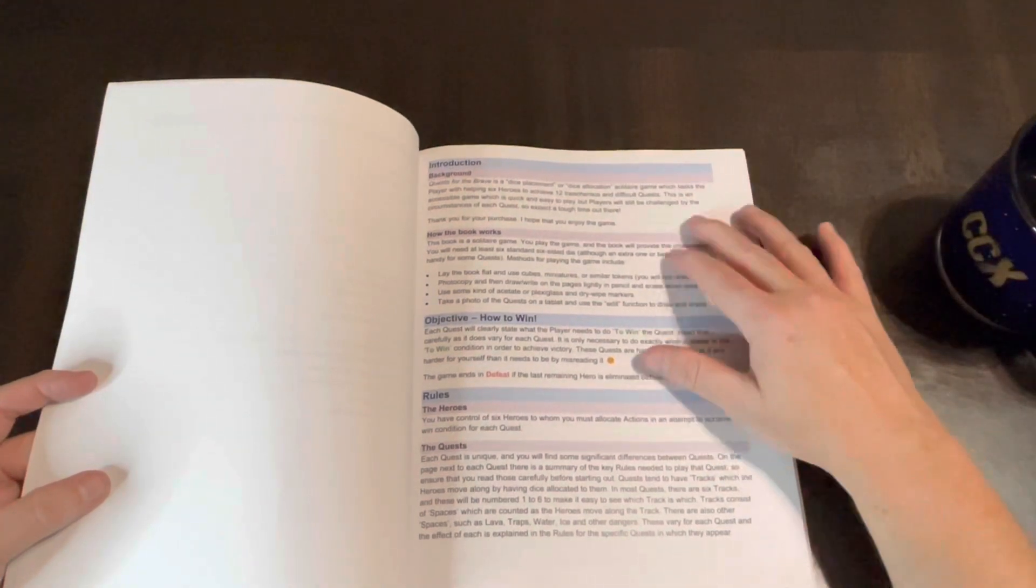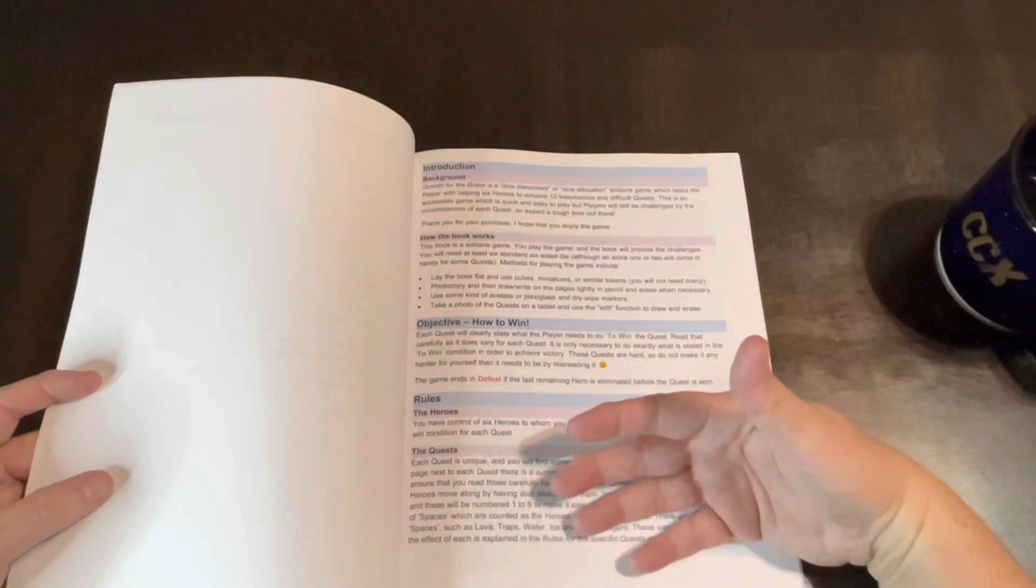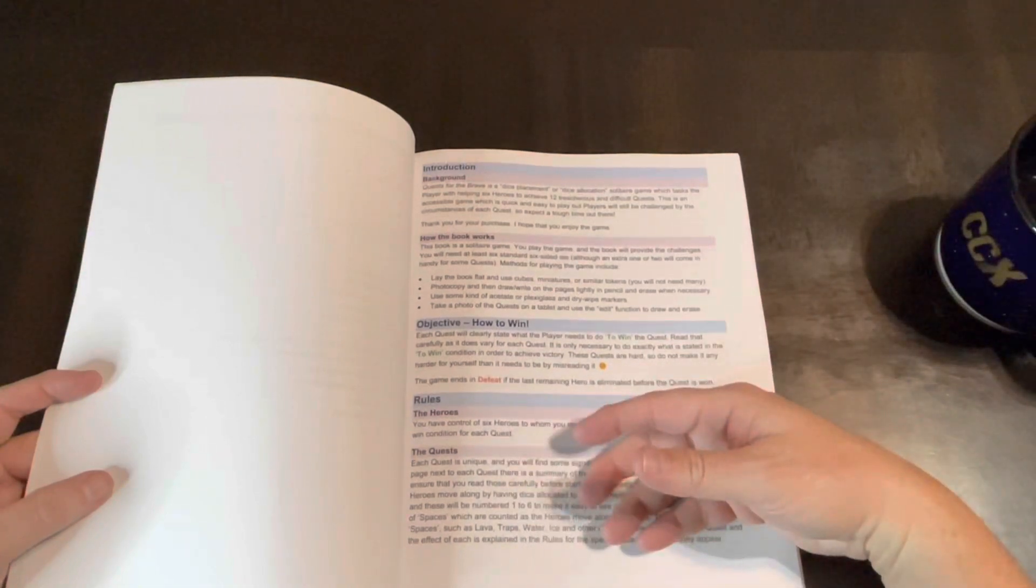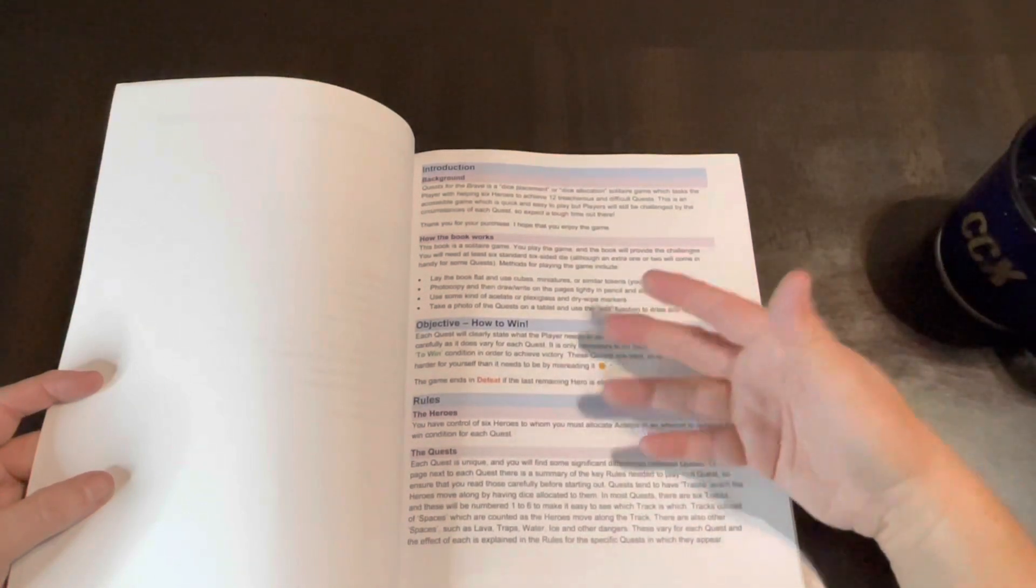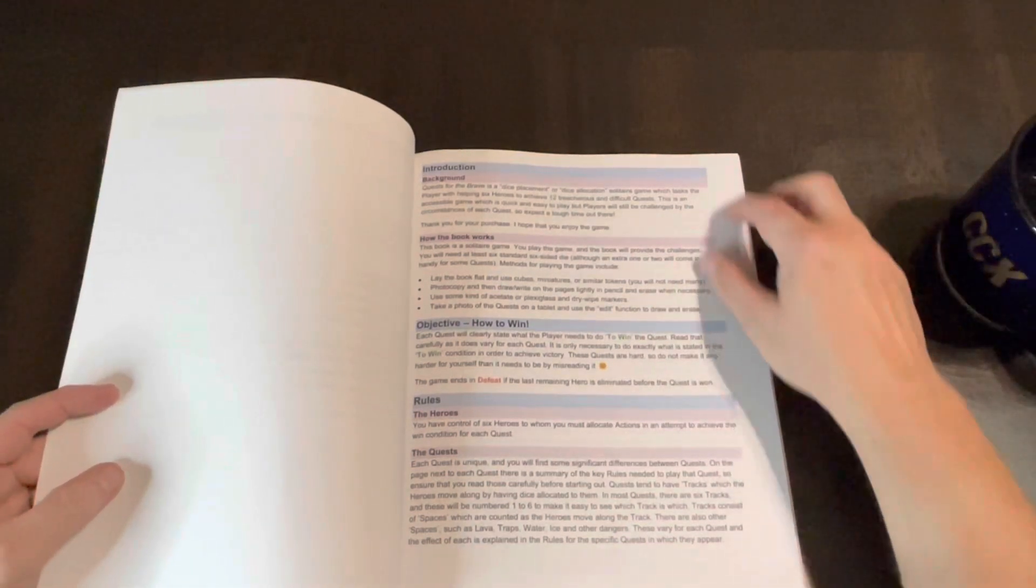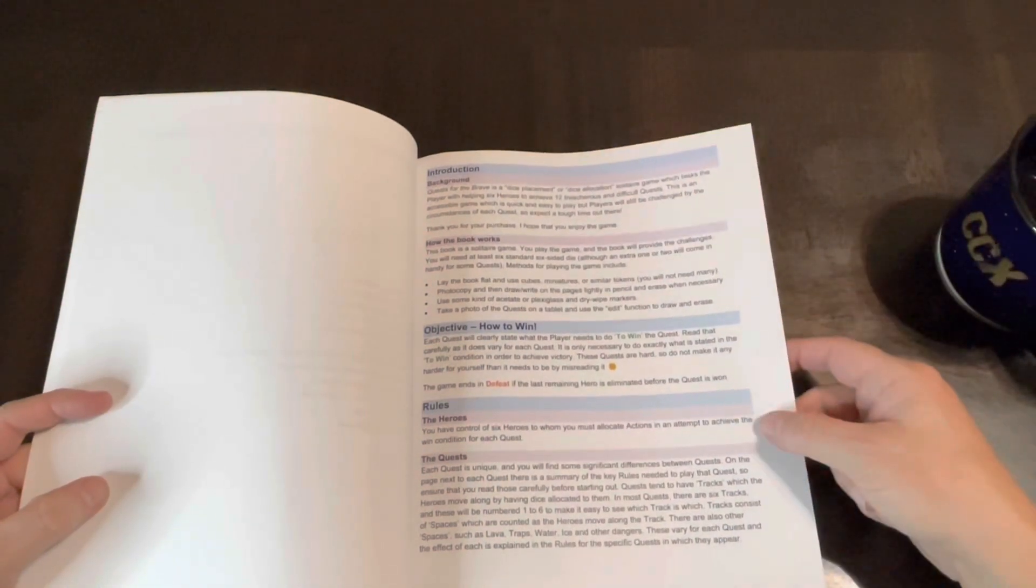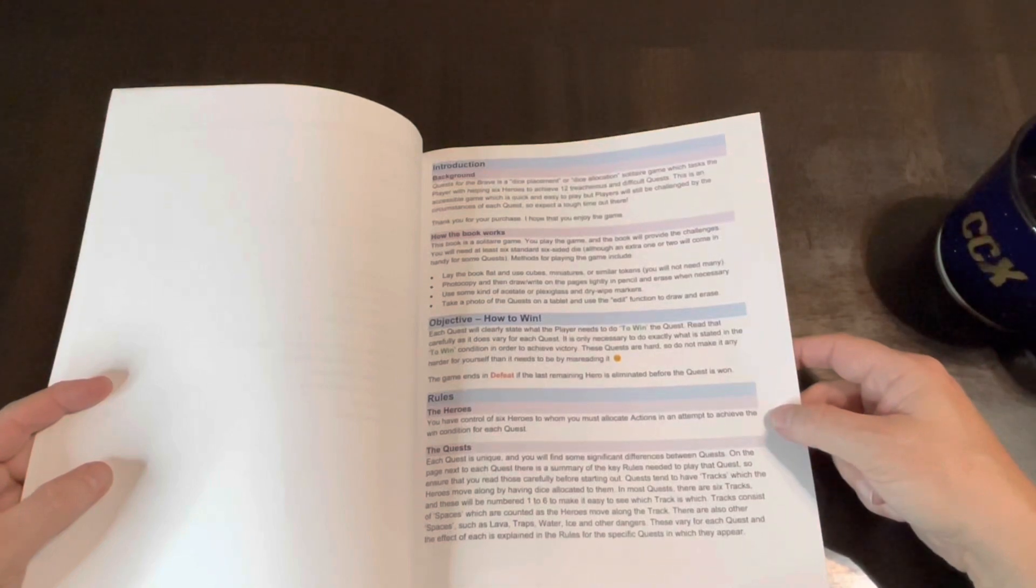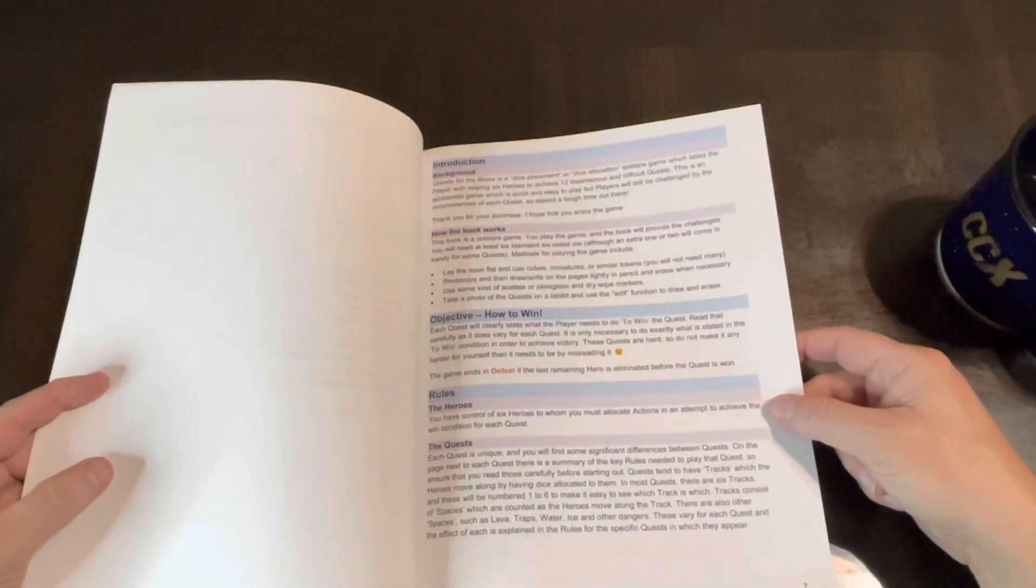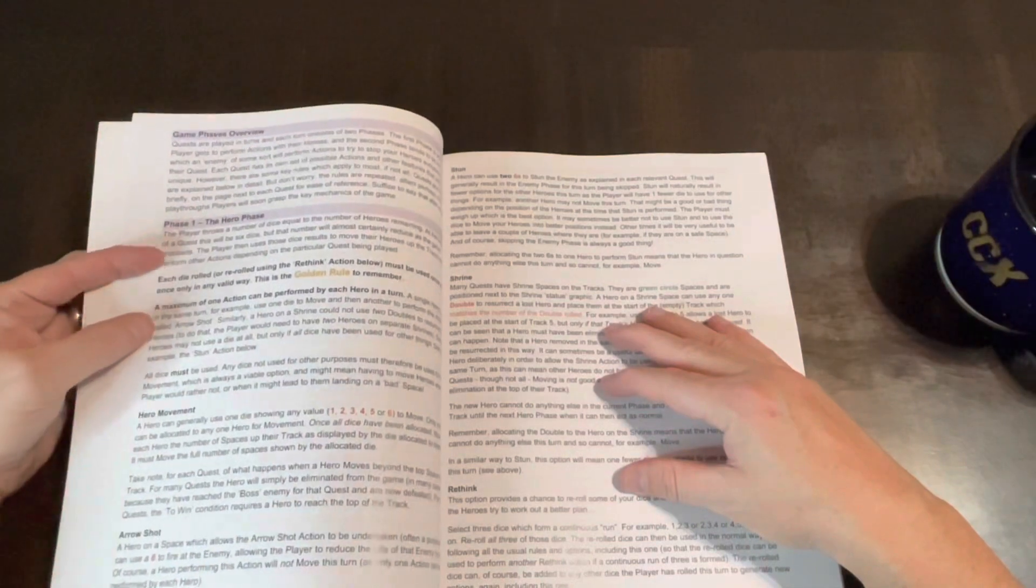Here's your introduction, what you need, background of it, how this book works. Says you can lay the book flat, use cubes, miniatures or similar tokens. You will not need many, so you don't have to mark in the book or you can keep the markers on the book, or you can make a photocopy and then mark that up, or you can mark in this book and try to erase it, or buy a new one. Objectives, how to win the rules. You have control of six heroes to whom you must allocate actions in an attempt to achieve the win condition on each quest. So each quest is going to have its own different win condition.